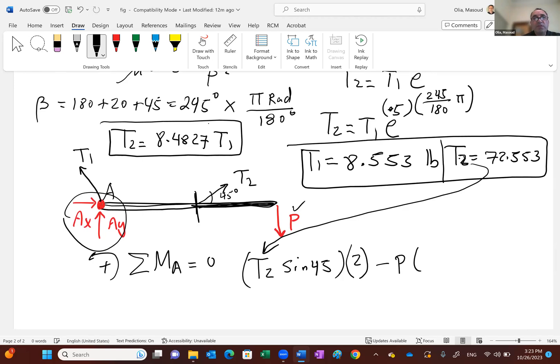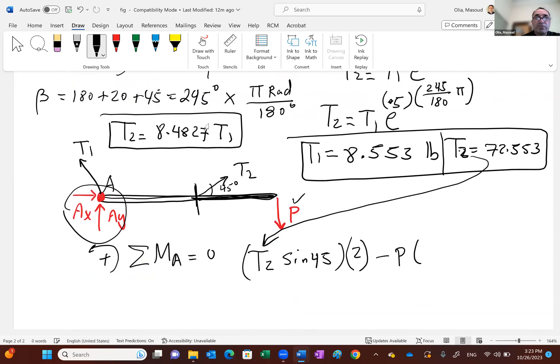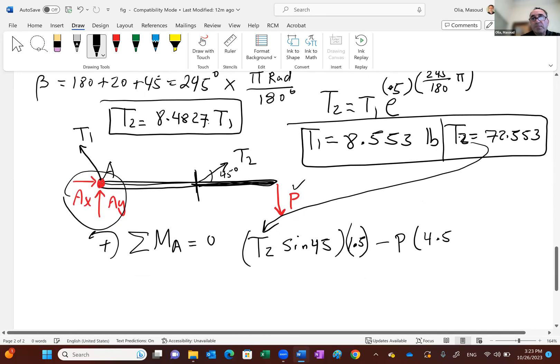And then P times, I'm sorry, that's 1.5 feet. And then P times what? 4.5, about A.